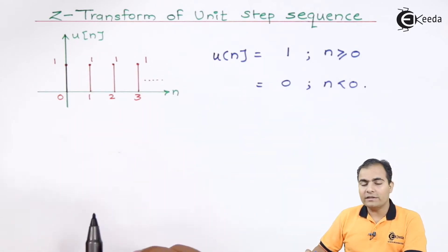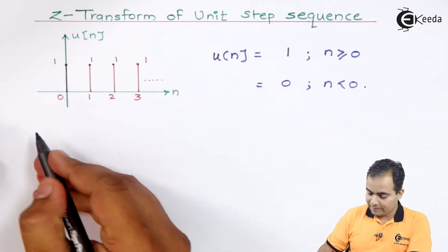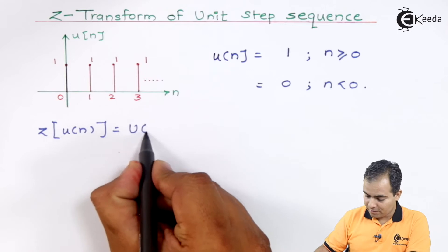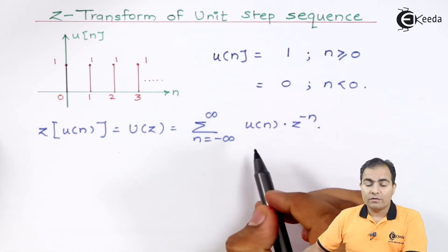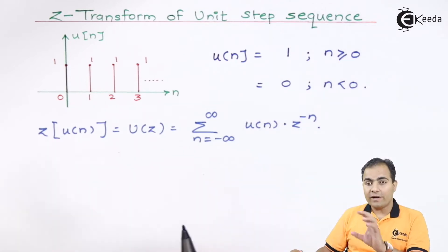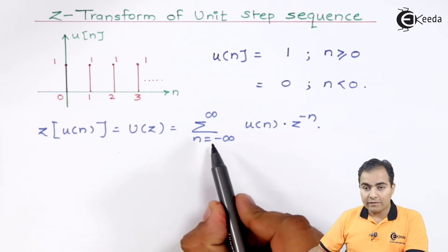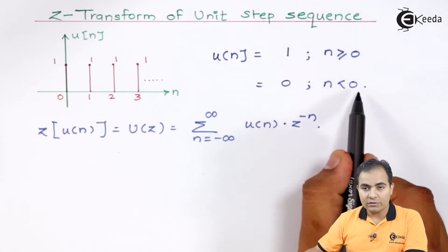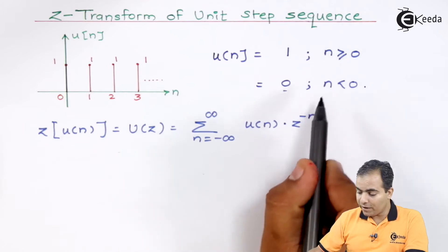Now we will find out the Z-transform and later on we will find out the ROC. By the definition of Z-transform, the Z-transform of u(n) is represented by U(z). We will substitute the value of u(n) because u(n) is available only from n = 0 to infinity, having amplitude 1. When n is less than 0 — from minus infinity to minus 1 — it has amplitude 0. We will apply these limits on the summation.